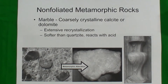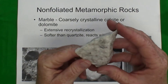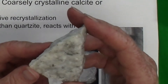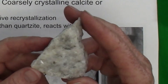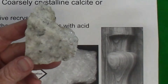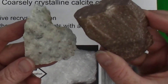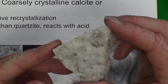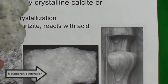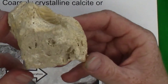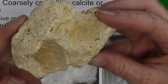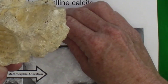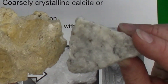Another common non-foliated metamorphic rock is marble. Marble can look very similar to quartzite in appearance — both can be pretty much any color and both are crystalline. The difference is that quartzite is made of the mineral quartz, while marble is made of the mineral calcite that has been recrystallized. The protolith is likely a rock like limestone, which is a sedimentary rock made of calcite and may include shell fragments. Heated up near a magma, it can recrystallize and turn into marble.